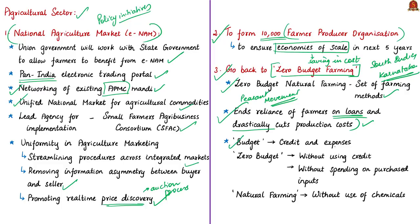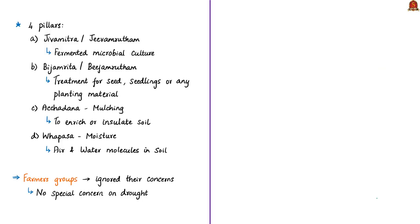The word 'budget' in zero budget farming refers to credit and expenses. The phrase 'zero budget' means without using any credit and without spending any money on purchased inputs. 'Natural farming' means farming with nature and without the use of chemicals. There are four pillars of zero budget natural farming. The first is Jivamrita or Jivamrutam — a fermented microbial culture.